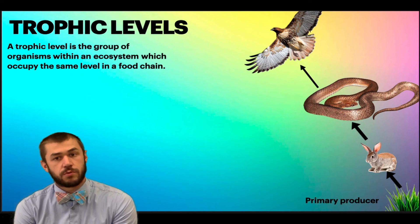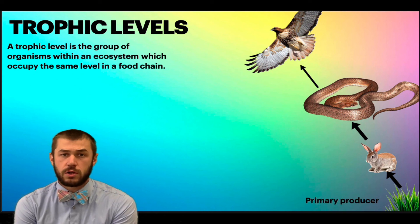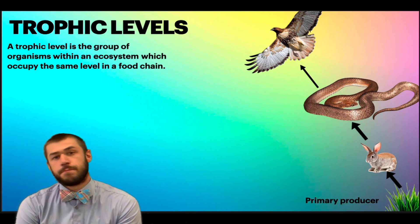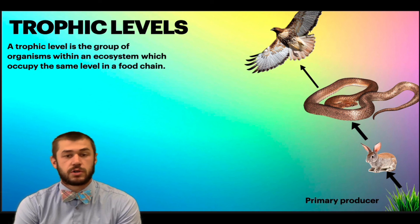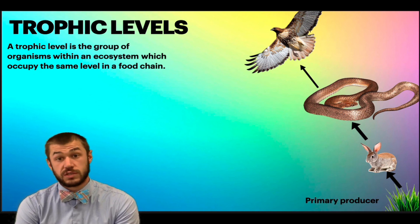So for example, we have primary producers. That's going to be all of the plants, the algae, at the base of the food chain. These are autotrophs. They produce their own food through photosynthesis.